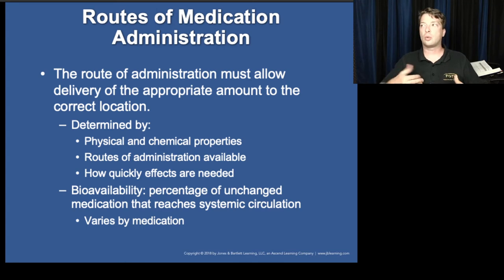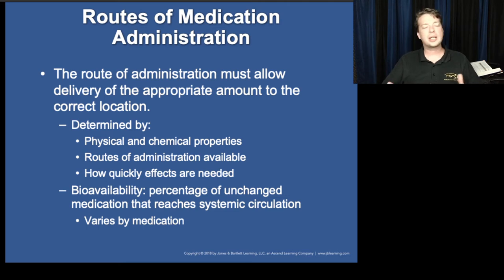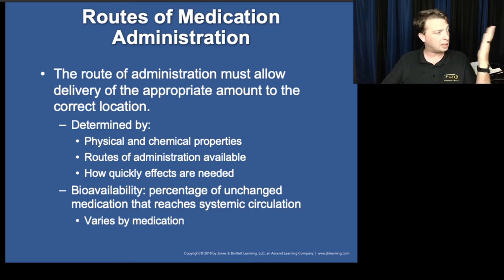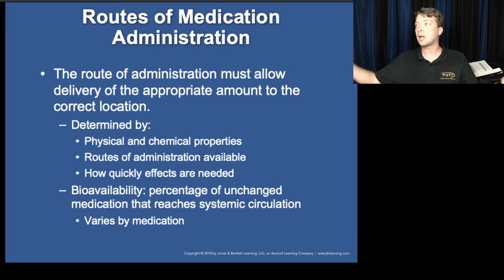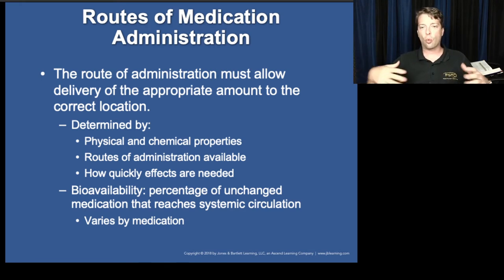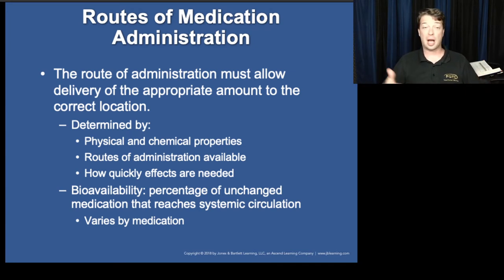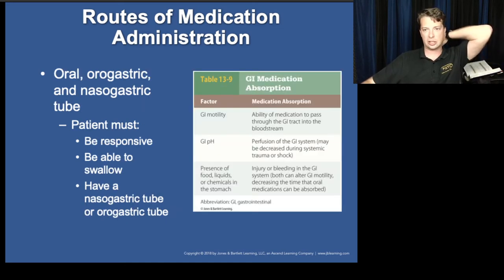Studies on bioavailability involve giving a set dose — say 100 milligrams — and measuring how much appears in the bloodstream at various time points. You don't need to know the exact bioavailability of each medication, but understand that's what drives differences in doses. That's why a PO dose may be higher than an IM or IV dose, and it relates to the process of elimination from the body.